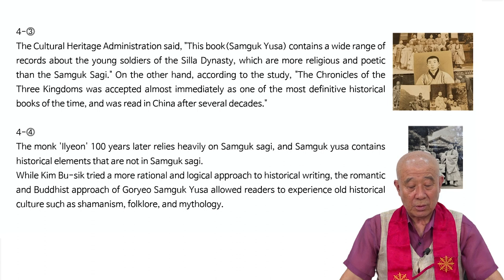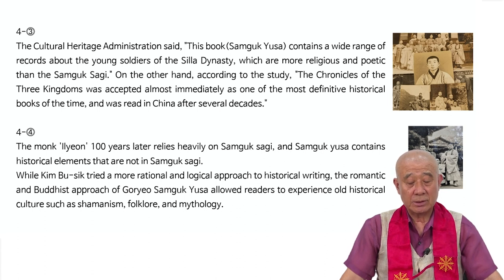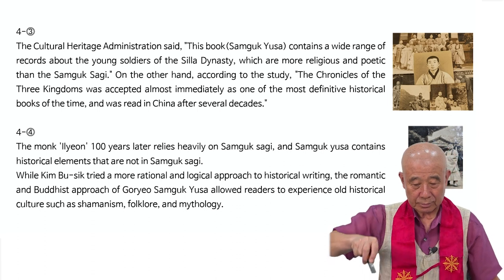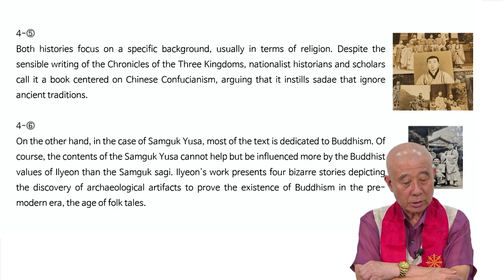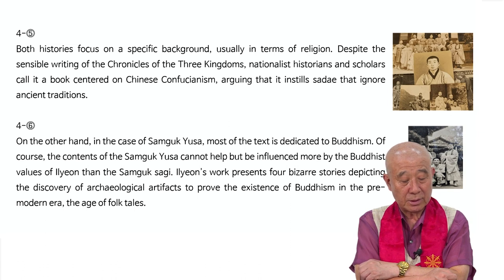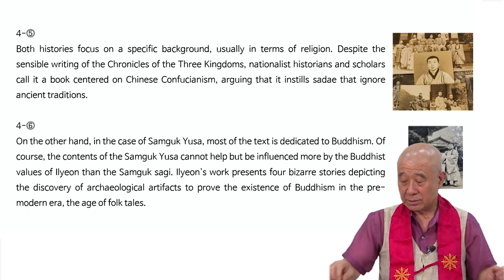While Kim Bushik took a more rational and logical approach to historical writing, the romantic and Buddhist approach of Samguk YUSA allowed readers to experience all the historical culture such as shamanism, folklore, and mythology. Despite the sensible writing of the Chronicles of the Three Kingdoms, nationalist historians and scholars call it a book centered on Chinese Confucianism, arguing that it instills 'Sade' — meaning 'serve the big' — that ignores ancient tradition.